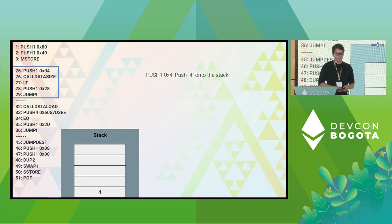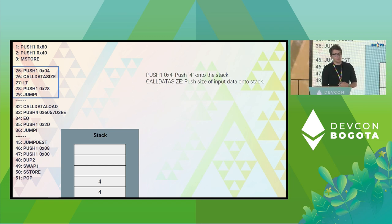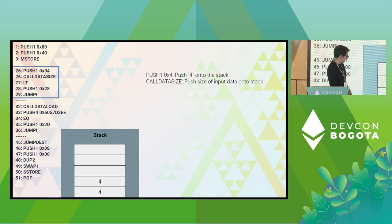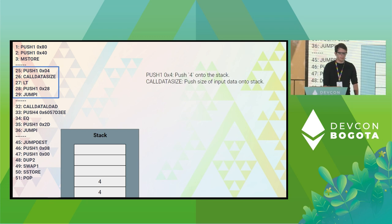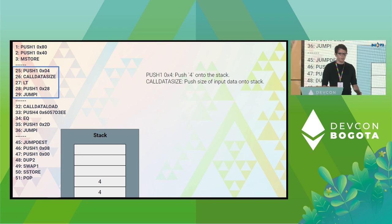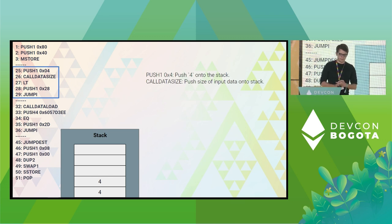On line 25, we push 4 onto the stack. On line 26, we encounter our first blockchain-specific opcode: CALLDATASIZE, which pushes the size of the input data onto the stack. Our input data size is 4 bytes. But where did this come from? We didn't send any ether, and we didn't send any arguments with our function call. So why is our call data size 4?